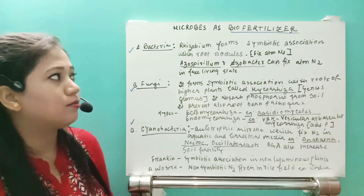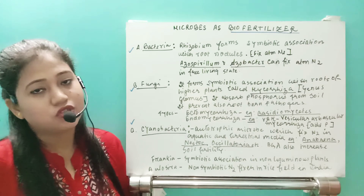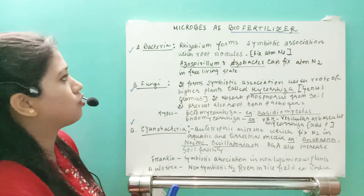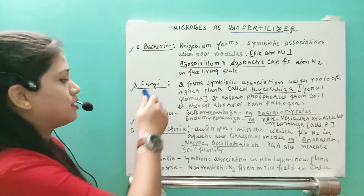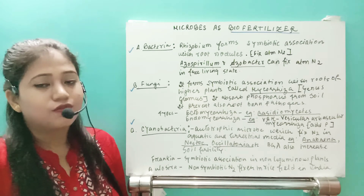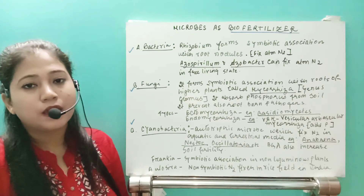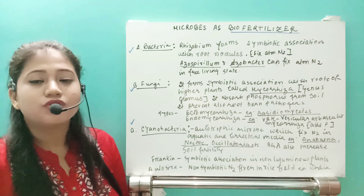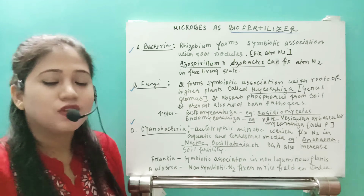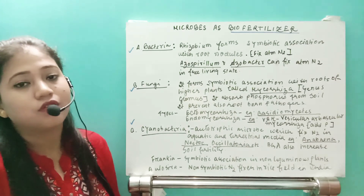The last part we will see here is biofertilizers. Questions will definitely come from here in board exams - one mark or two mark questions - and specifically examples will be asked. Fertilizer means those which increase or enrich the nutritional quality of the soil, increasing nutrients like nitrogen, phosphorus, and calcium, so plants can absorb them and crop productivity is enhanced.